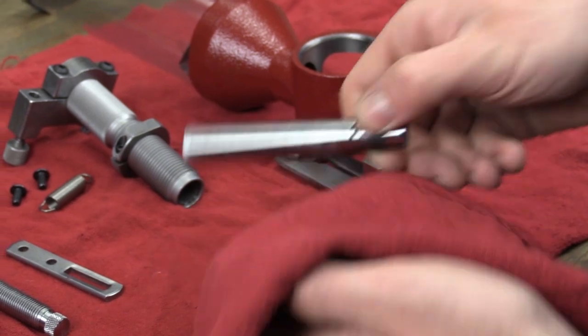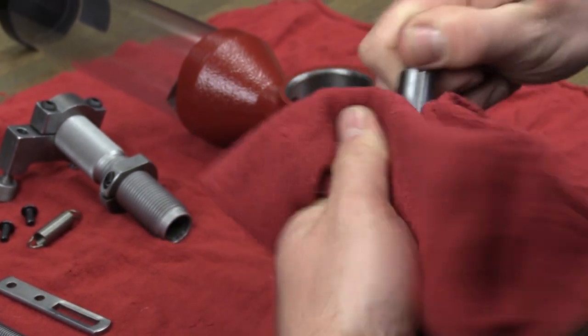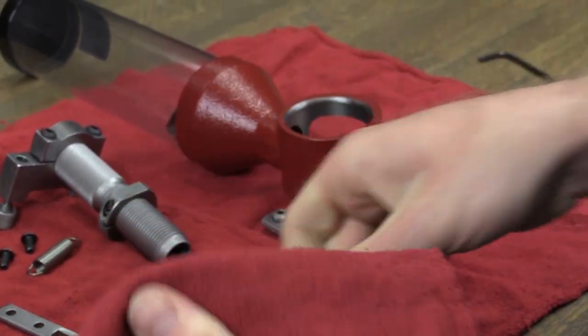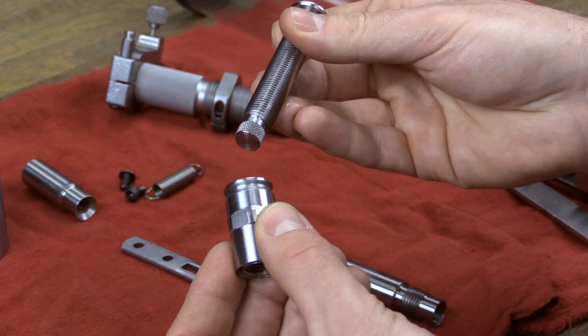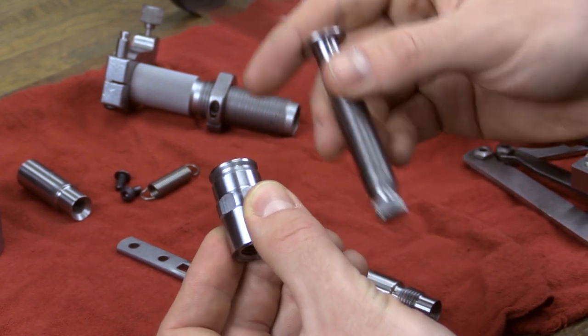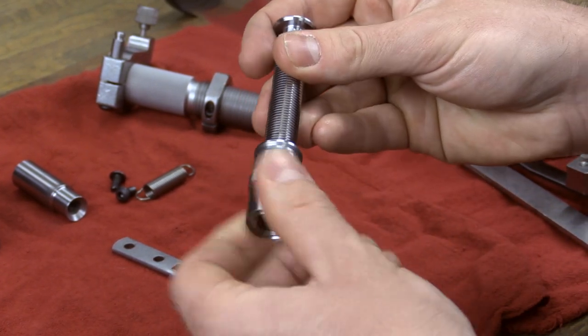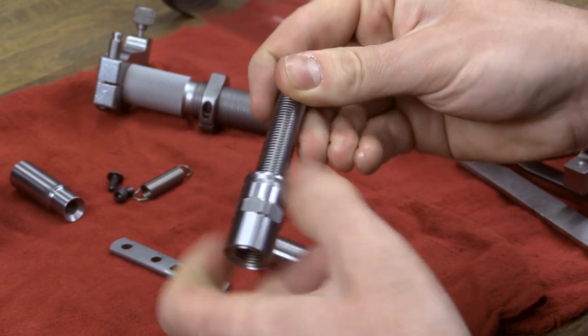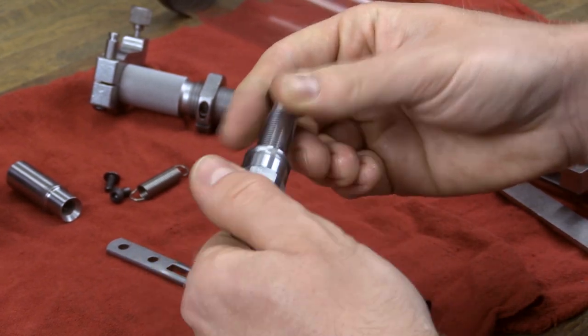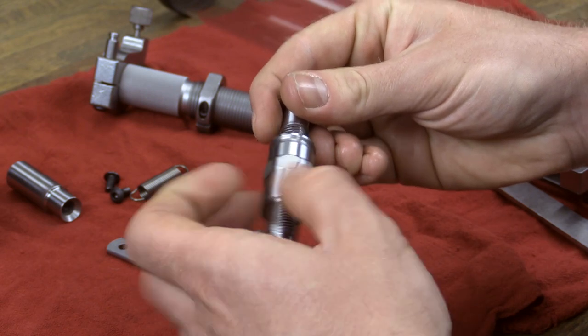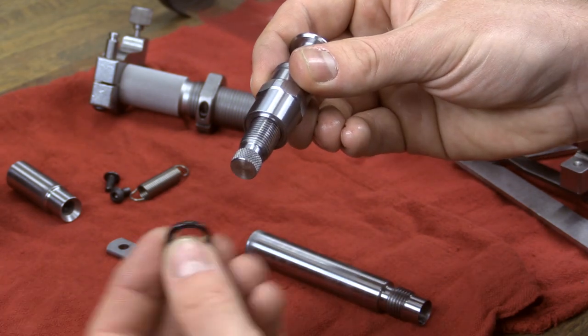You may need to wipe away excess lubricant with a rag. You are now ready to begin reassembling. First, assemble the metering unit by threading the sleeve properly onto the metering plunger with the grooved end of the sleeve threading on first, followed by the O-ring and the lock nut.